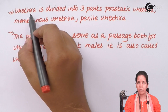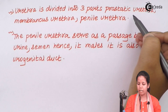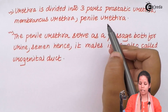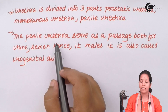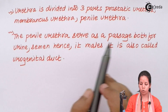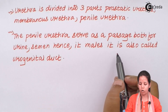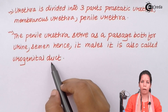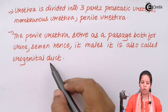In males, the urethra is divided into three parts. The first part is the prostatic urethra, the second is the membranous urethra, and the third is the penile urethra. The penile urethra serves as a passage for both urine and semen. That is the reason in males it is called the urogenital tract or urogenital passage. While in females, this is not the case — it never serves both purposes as it does in males.